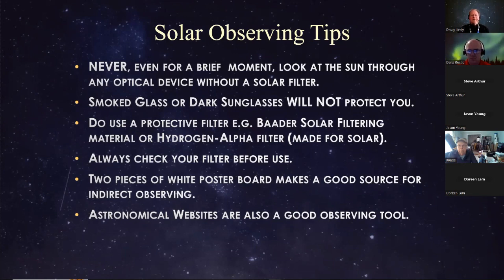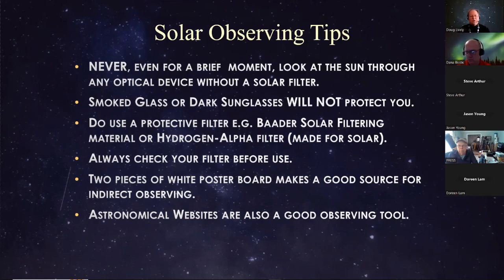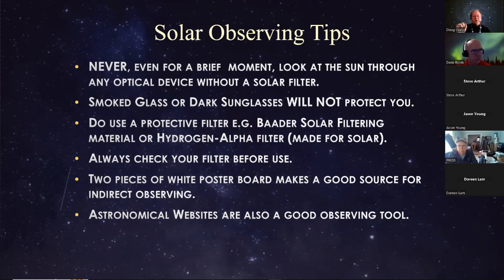You definitely have to use some type of protective filter with the sun — Baader solar filtering material or a hydrogen-alpha filter made specifically for solar observing. Please don't just get any hydrogen-alpha filter; it has to be made for solar use. Always check your filter before use by holding it up to the sun and making sure there aren't any holes. If there is a small hole, you can use electrician's tape on either side of the filter to plug it.